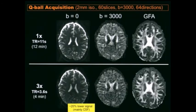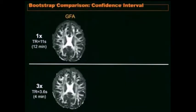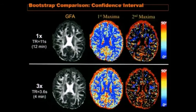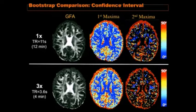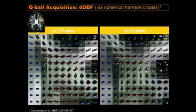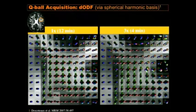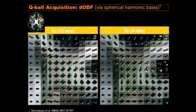Bootstrap analysis with five acquisitions of both 1× and 3× shows the angle of uncertainty for first and second ODF maxima is essentially the same. Zooming into a particular region, the ODFs for the 12-minute 1× and 4-minute 3× acquisitions are essentially identical.